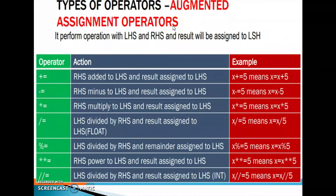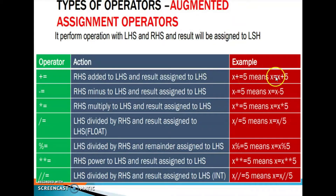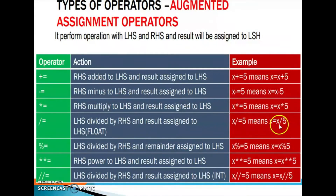Types of operators: augmented assignment operators. It performs the operation with LHS and RHS and the result will be assigned to LHS. Plus equals: RHS is added to LHS and result is assigned to LHS. x plus equals 5 means x is equal to x plus 5. Similarly, minus equals: x minus equals 5 means x is equal to x minus 5. Slash equals: x slash equals 5 means x is equal to x divided by 5. Double star equals: x double star equals 5 means x is equal to x double star 5.